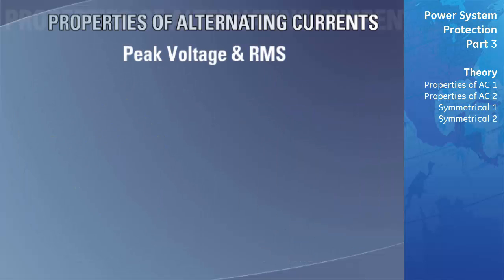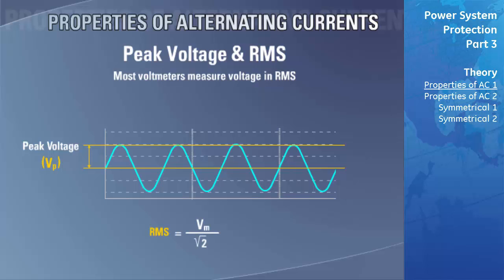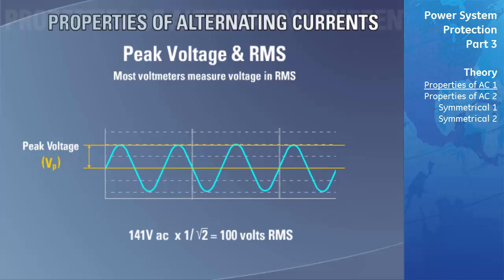Most voltmeters measure voltage in RMS. The RMS value of a sine wave can be calculated by multiplying the peak voltage magnitude by one divided by the square root of two. Peak value equals the square root of two times Vrms. The RMS value of an AC waveform, when applied to a purely resistive load, will raise the temperature of that load to the same level as a DC voltage of the same magnitude. This means a 141-volt peak AC sine wave has the same heating effect as 100 volts DC.